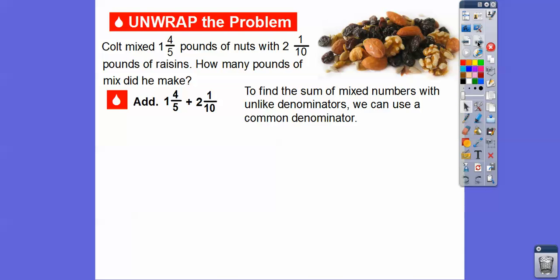So to find the sum of mixed numbers with unlike denominators, we can use the common denominator, just like the last lesson here. So let's estimate this sum right here to see if our answer is going to be reasonable at the end. 4 fifths is almost close to 1 because 4 is almost close to 5. This is almost 1. So this is almost 1 plus 1 or 2.